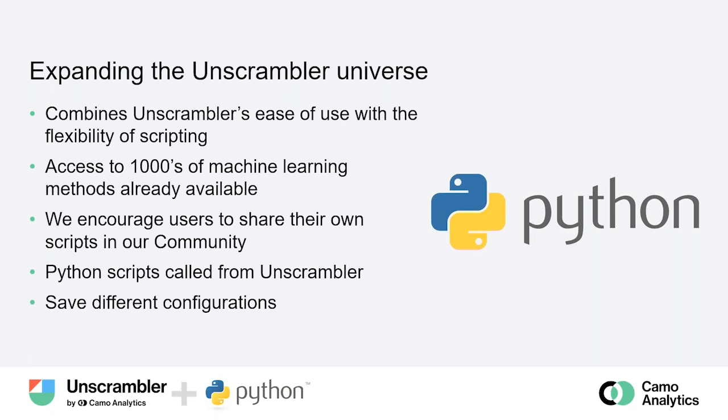We also encourage users to share their own scripts via our community — for instance, data handling and pre-processing scripts that are useful for spectroscopists. The way Python scripting is implemented is that you open Unscrambler, open your user interface, and call Python scripts from within Unscrambler, keeping all the ease of use. It's also possible to save different configurations so you don't have to set them up again every time, which also saves time.